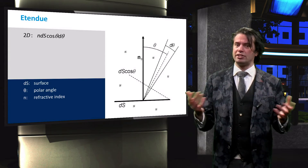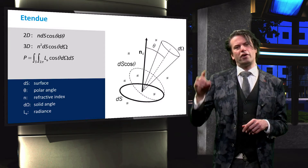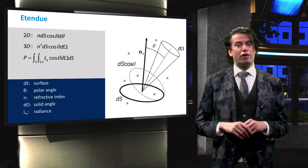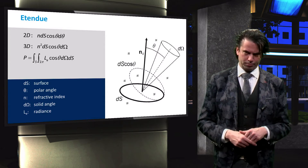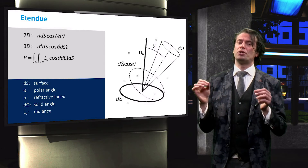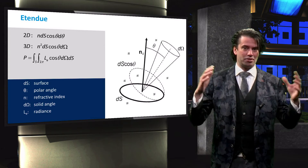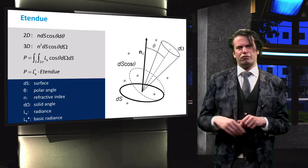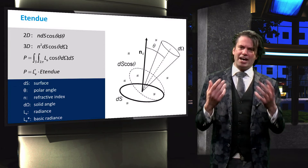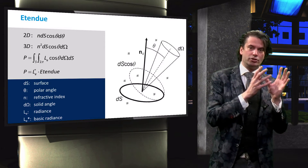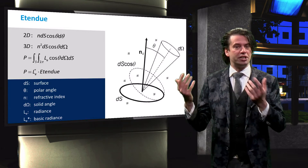The relevant property is the projection of ds to the normal of the direction. This is also known as the Lambert cosine law. For a three-dimensional system, the azimuth has to be taken into account, and the étendue is then described by the shown equation. Recalling our equation for the total incident power, we can see that the power can be defined as the product of the étendue of an optical system and the basic radiance of the illumination source.